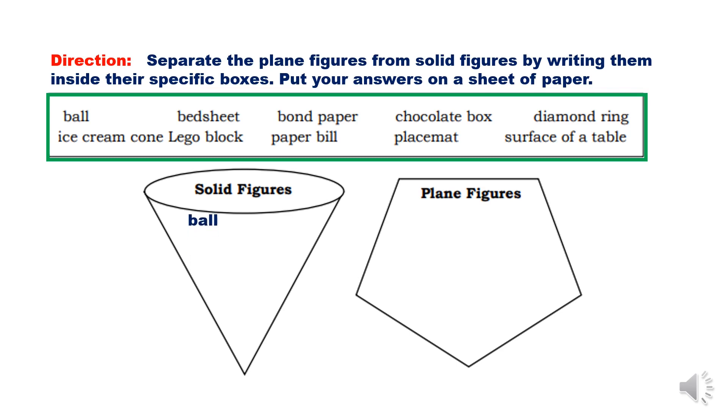Ball - that is solid figure. Bed sheet - that is plane figure. Bond paper is also a plane figure. Chocolate box - that is solid figure. And then continue this activity and I'll give you time to answer this and time starts now.